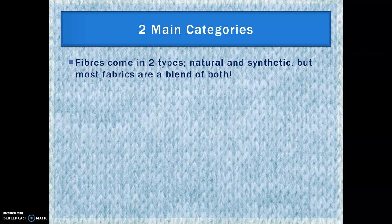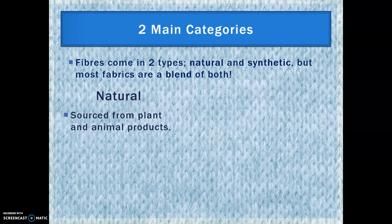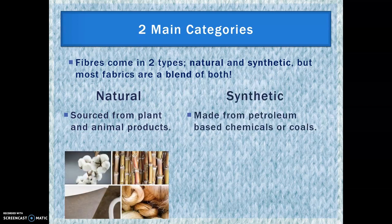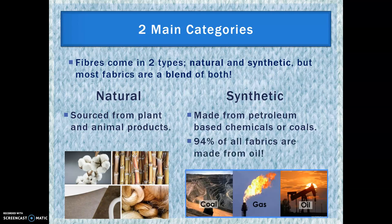There are two main categories: natural and synthetic, but most fabrics are actually a blend of both. Natural fibres come from plant and animal products, whereas synthetic fibres come from petroleum-based chemicals or coal. 94% of all fabrics nowadays are made from oil, because it's so cheap and abundant. Whereas in the past, of course, they would all be natural.